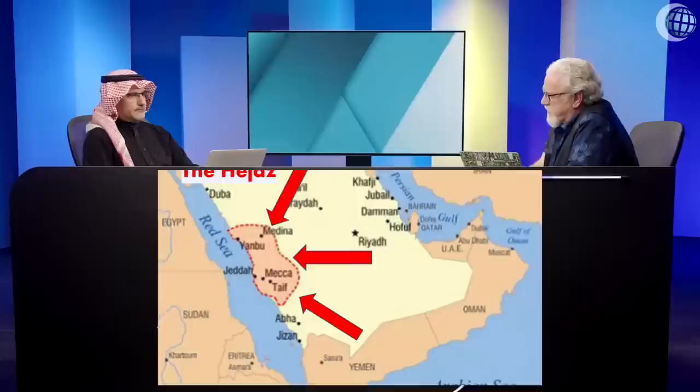Let's go to the slide and look at the map of Saudi Arabia — I'm using the modern name. The Quranic Arabic — this is the Qureshi, the tribe that Muhammad came from, according to the traditions. This is what the traditions tell us: he spoke the Qureshi Arabic when this book was finally written in 652 by Zayd ibn Thabit under the authority of Uthman. He said to write it in the Qureshi dialect.